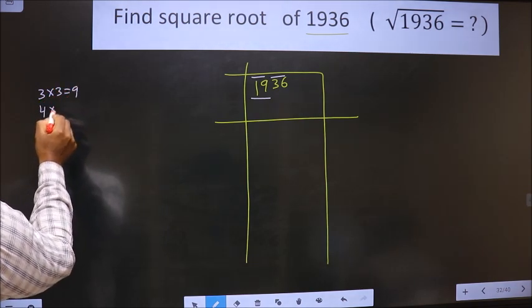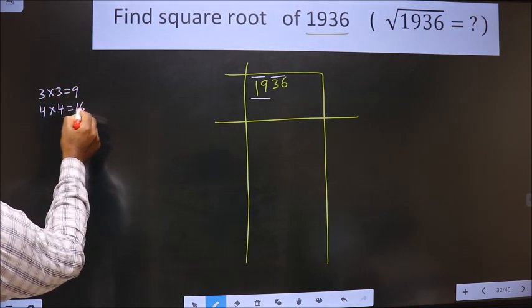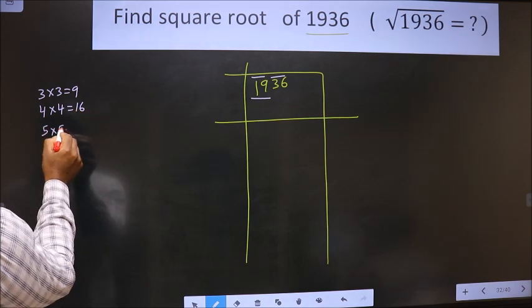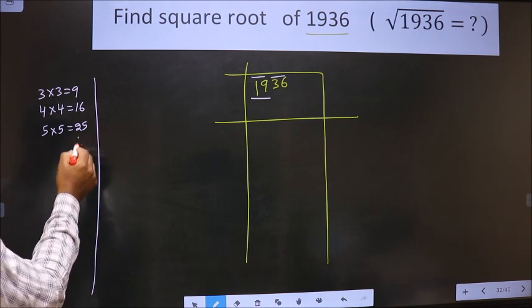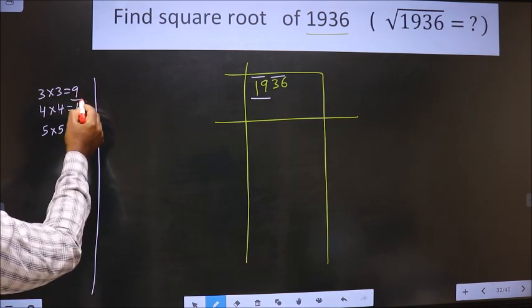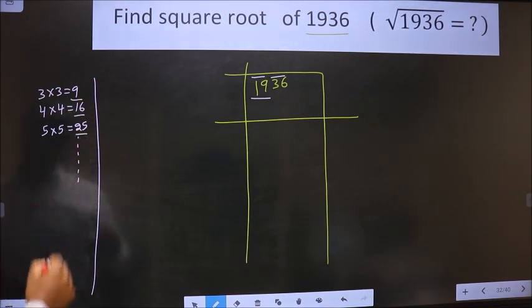4 into 4, 16. 5 into 5, 25. And this goes on. These numbers are called perfect squares.